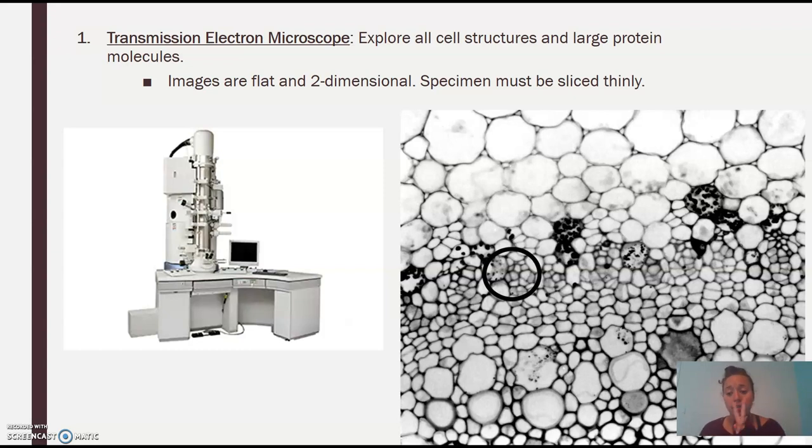So transmission. So the electron microscope has two different ones. The first one is called transmission. That one's going to be just flat, two-dimensional, kind of almost looks like the same picture that you would see with your light microscope, the compound. But it is more in-depth.